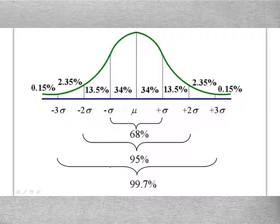you probably see this somewhere representing the empirical rule. And it gives me different percentages based on whether I'm one, two standard deviations above, below the mean, and so on.